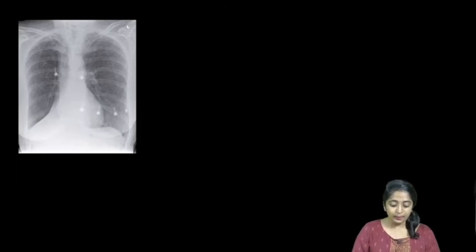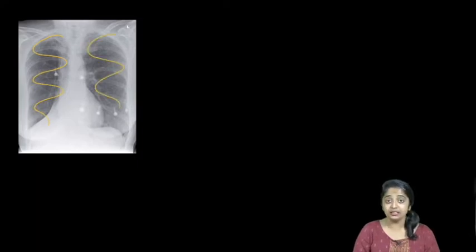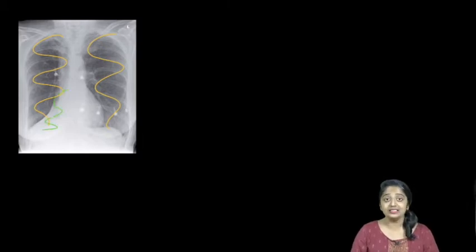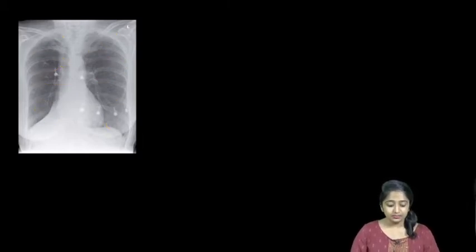Going by the algorithm, I'm scanning through the lung fields. Yes, I've seen a pathology. Where is it? It's somewhere located here, and what is the pathology like? It is an opacity. So we have a pathology in the form of an opacity, a triangle of opacity.